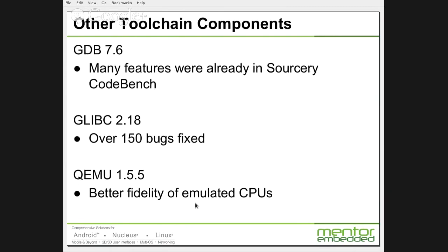Other changes in the toolchain: GDB has been updated from 7.4 to the upstream stream 7.6. Many of the features that Sourcery users relied on — particularly remote debugging features — were already in earlier versions of CodeBench because they had already been upstreamed by us. Now we've updated our sources to track upstream FSF releases more closely. Glibc, which is the Linux C library, has been updated to 2.18 from 2.17. That's got over 150 bugs fixed — you can see the full list on the FSF release pages.